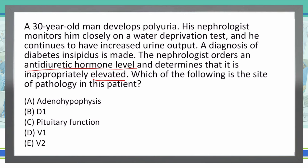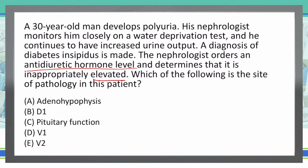Let's look at this real quick. The antidiuretic hormone level is elevated. So a patient is peeing a lot of urine, and we have antidiuretic hormone in the body that's elevated, but they continue to pee. What does that tell you? That tells me that the antidiuretic hormone is not working on its target. The target of antidiuretic hormone is the kidney, so we have a problem somewhere in the kidney.